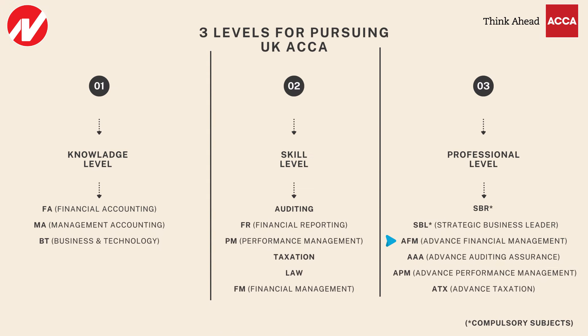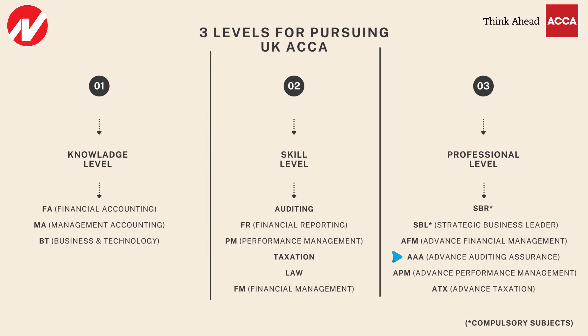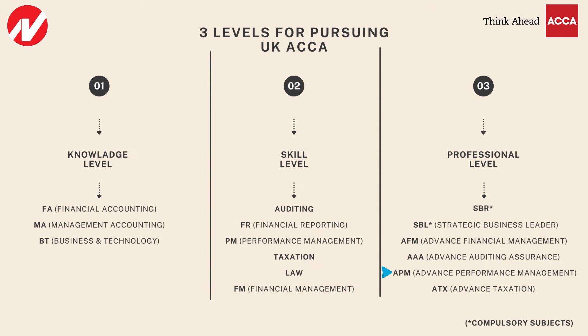Out of the remaining four optional subjects, students need to choose two. The options are: AFM — Advanced Financial Management, which is the extension of Financial Management from Skill Level; AAA — Advanced Auditing and Assurance, extension of Auditing; APM — Advanced Performance Management, extension of Performance Management; and ATX — Advanced Taxation. So students choose two out of these four, plus the two compulsory subjects SBR and SBL.